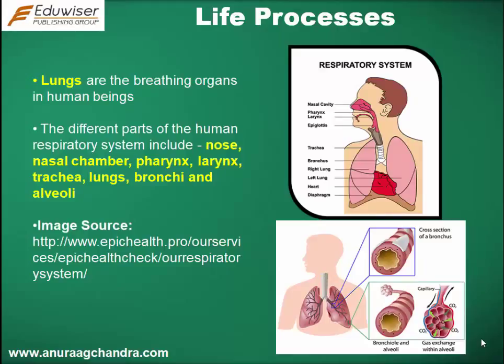The different parts of the human respiratory system include nose, nasal chamber, pharynx, larynx, trachea, lungs, bronchi, and alveoli.